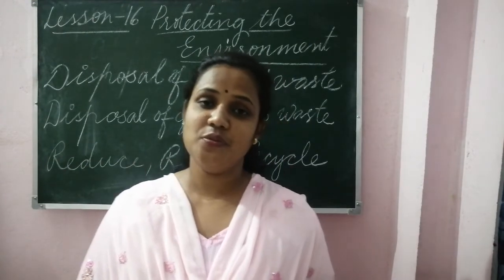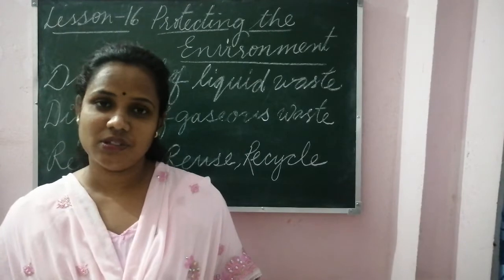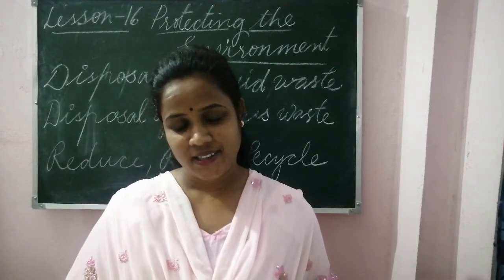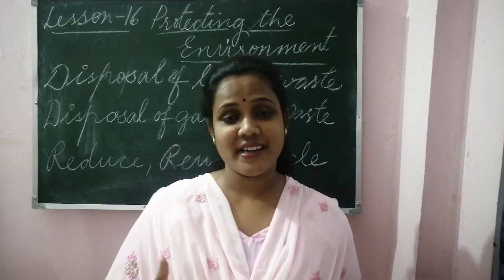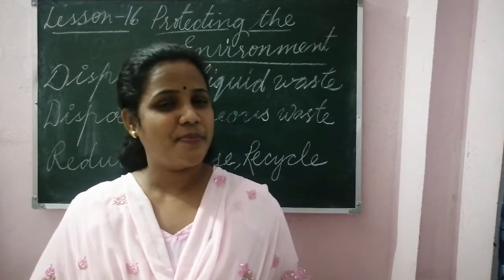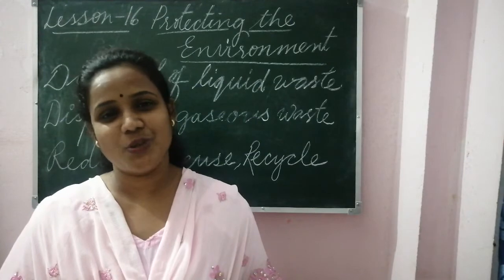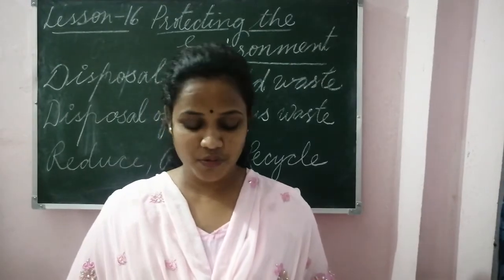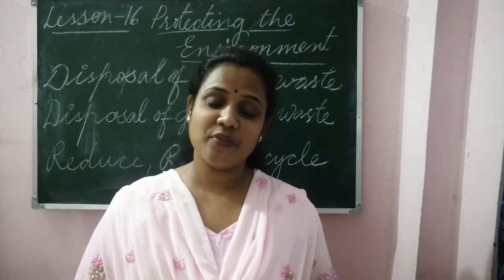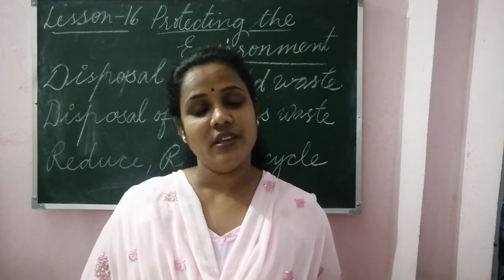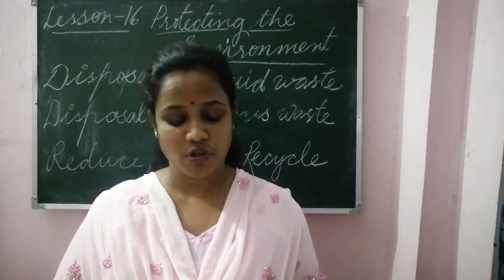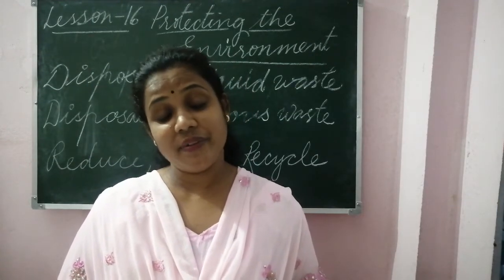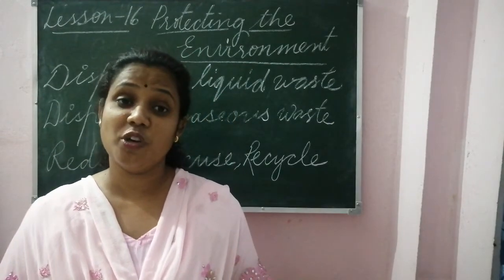First, eat food in washable plates and avoid packed food. Do not buy packed items - chips, biscuits and all - as after eating we throw the wrappers which are made of polythene. Try to avoid packed food items. Carry a jute bag if you are going shopping for vegetables - take your own cloth or jute bag, not polythene or plastic. Buy only what you need.